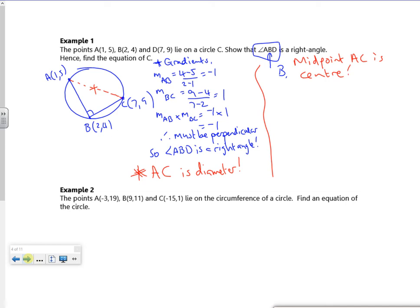Right, so I want the average of the x's. So that's 1 plus 7 over 2. And the average of the y's, 5 plus 9 over 2. So the center is 4 comma 7.